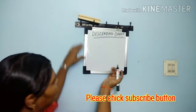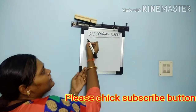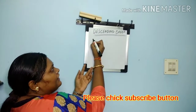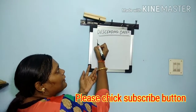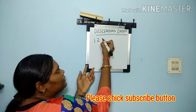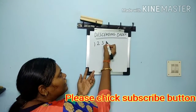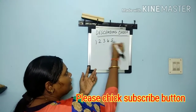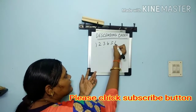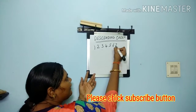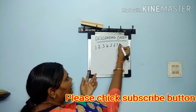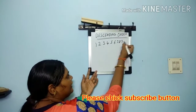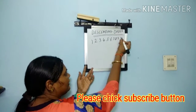Ask the kids first to write the numbers properly, from 1, 2, 3, 4, 5, 6, 7, 8, 9, 10.